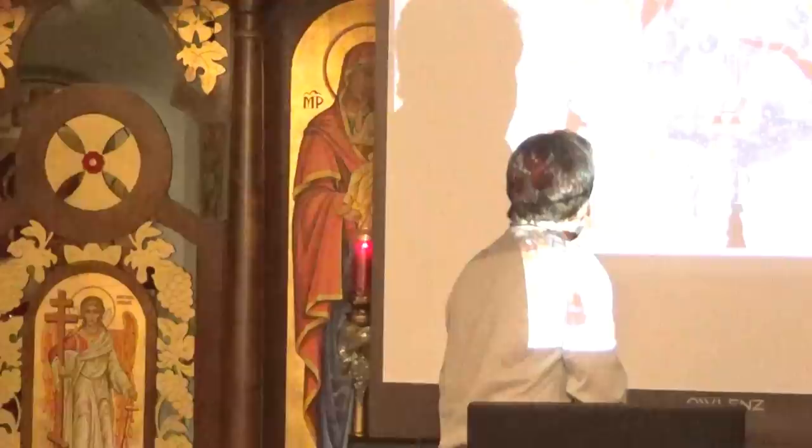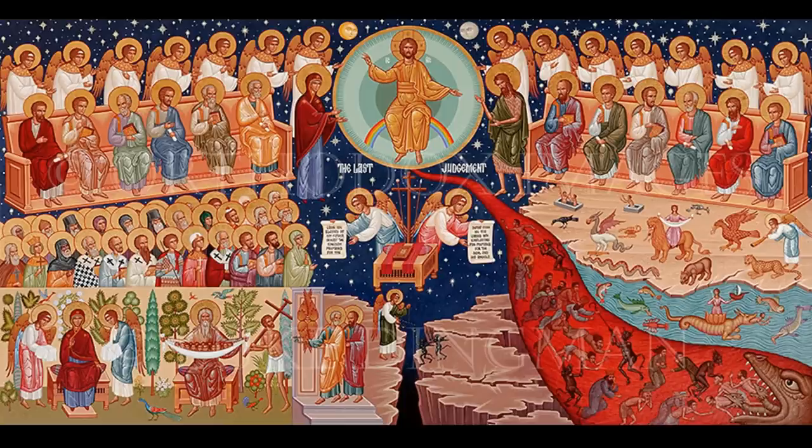What were the words on the scrolls for the angels? I couldn't find what was written, but I think it probably has to be the words of Christ saying 'Enter into my kingdom' on one side, and then 'Depart from me' on the other. I think that's what it is, but I couldn't read it.